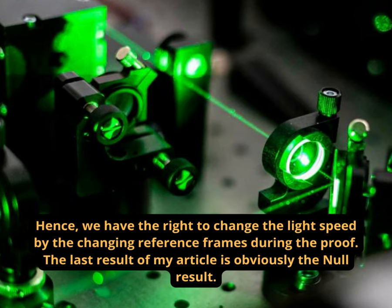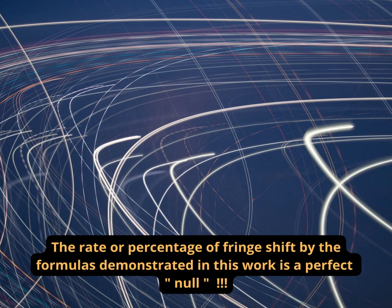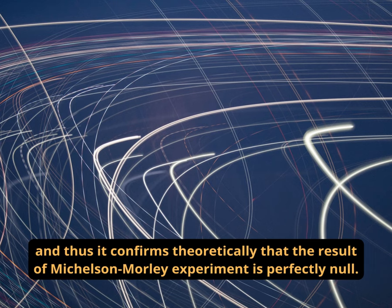The last result of my article is obviously the null result. The rate or percentage of fringe shift by the formulas demonstrated in this work is a perfect null and thus it confirms theoretically that the result of Michelson-Morley experiment is perfectly null.